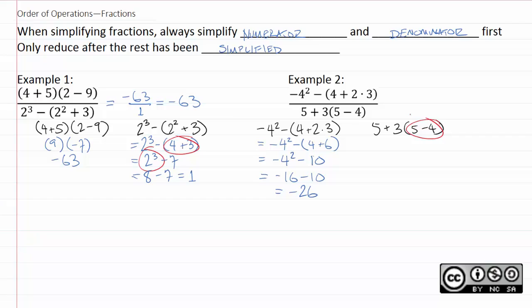As for the denominator, again, we begin with that parenthetical. 5 minus 4 is obviously 1. So, we have 5 plus 3 times 1. We have multiplication and addition here. The multiplication comes first. So, I get 5 plus 3, which is 8.